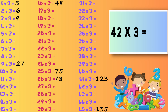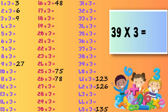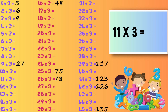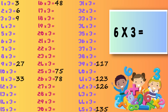Forty-two times three — one hundred and twenty-six. Thirty-nine times three — one hundred and seventeen. Eleven times three — thirty-three. Six times three — eighteen.